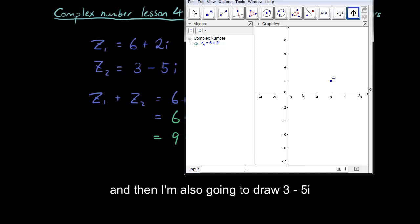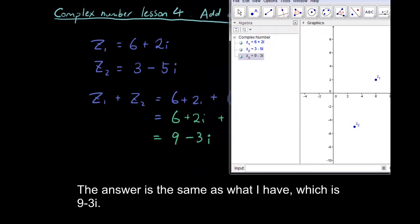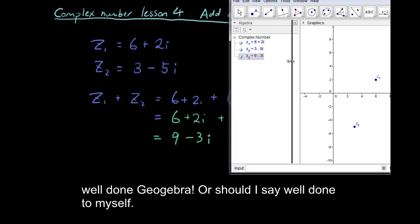And then I'm also going to draw 3 minus 5i onto the graph. So I have 3 as the real axis and negative 5 as the imaginary. And now if I put z underscore 1 plus z underscore 2, let's see if Geogebra will add them for me. And Geogebra has added them for me. And you can see that the answer is the same as what I have, which is 9 minus 3i.